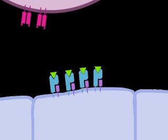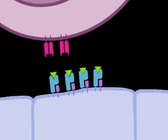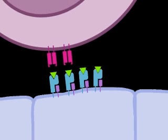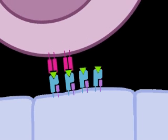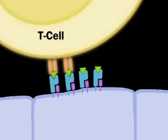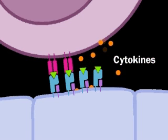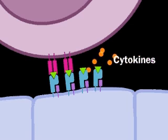Once the T cell has docked, the antigen-presenting cell releases cytokines — chemical signals that activate the T cell. The activated T cell produces another cytokine and receptors for it. This cytokine causes the T cell to divide.